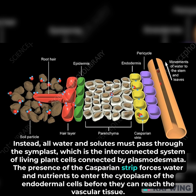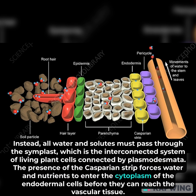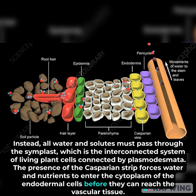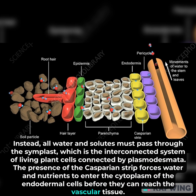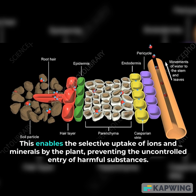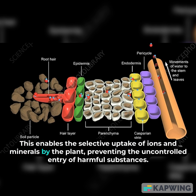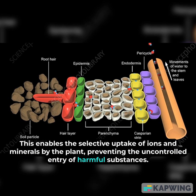The presence of the Casparian strip forces water and nutrients to enter the cytoplasm of the endodermal cells before they can reach the vascular tissue. This enables the selective uptake of ions and minerals by the plant, preventing the uncontrolled entry of harmful substances.